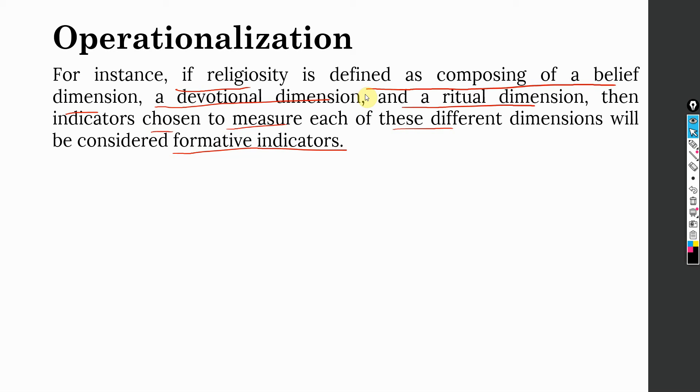If religiosity is defined as composing of a belief dimension, a devotional dimension and a ritual dimension, these are three dimensions, then indicators chosen to measure each of these different dimensions will be considered formative indicators. Those indicators are forming these dimensions. However, there could be another opinion as well. Let's say it is religiosity that has got three dimensions: one is belief, the other one is devotional and the last one is ritual. Belief has got certain indicators, they can be referred to as reflective. Same for devotional and same for ritual. They may be interchangeable. But when these three dimensions combine, they actually form religiosity. So this is formative at higher level, but reflective at lower level.